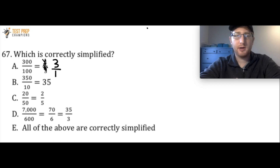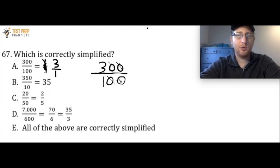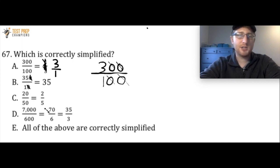Okay, hopefully my little typo didn't throw you off. The trick I want you to see here: in the case of 300 divided by 100, we've got the same number of zeros in both the top and bottom number, so we can cancel all the zeros out — leaving us with 3 over 1. For B, 350 divided by 10: cancel the zeros, leaving 35 over 1, which is just 35. Same with C — 20 over 50: cancel the zeros, leaving 2 over 5.